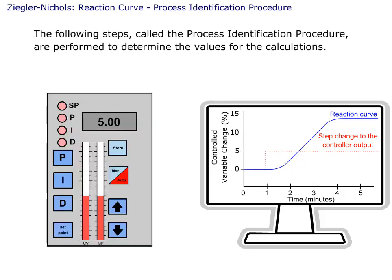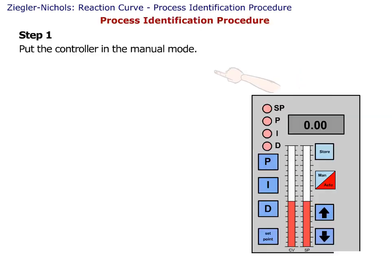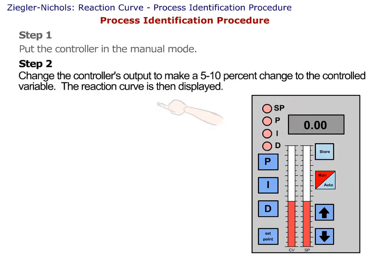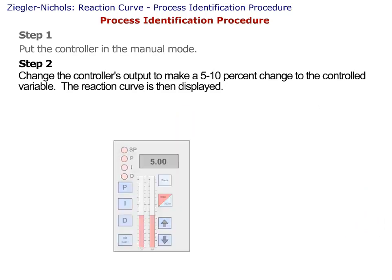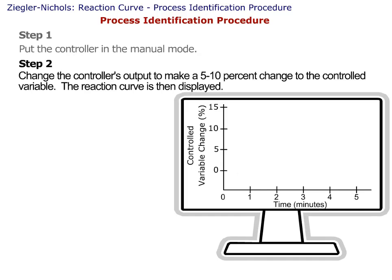The following steps, called the process identification procedure, are performed to determine the values for the calculations. Step 1: Put the controller in the manual mode. Step 2: Change the controller's output to make a 5 to 10 percent change to the controlled variable. The reaction curve is then displayed.